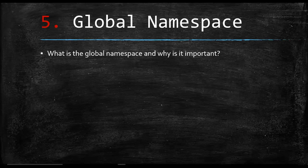Number five is the global namespace. A lot of people don't understand what it means to pollute the global namespace. They don't understand what the window object is in JavaScript and why attaching things to it is a bad idea — especially if you have a var and you're storing a number for some particular execution time. They pollute the global namespace, have naming conflicts and clashes, and it's just a terrible experience.